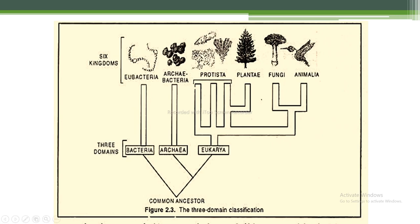The three domains — Bacteria, Archaea, and Eukarya — arise from a common ancestor. The domain Bacteria gave rise to kingdom Eubacteria. The domain Archaea gave rise to kingdom Archaebacteria. The domain Eukarya is divided into Protista, Plantae, Fungi, and Animalia. In this way, a common ancestor gave rise to three domains, and these three domains gave rise to six kingdoms.